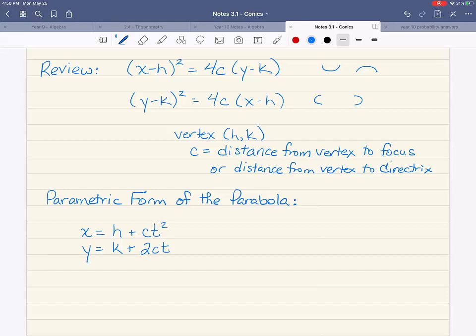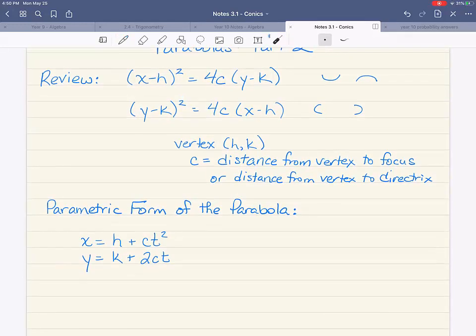This is a little backwards, because if you look up here, when x is squared, it opens up and down. Here, if x has the squared t in it, it does the opposite of what you think. This one actually opens right or left. This is a horizontal parabola.